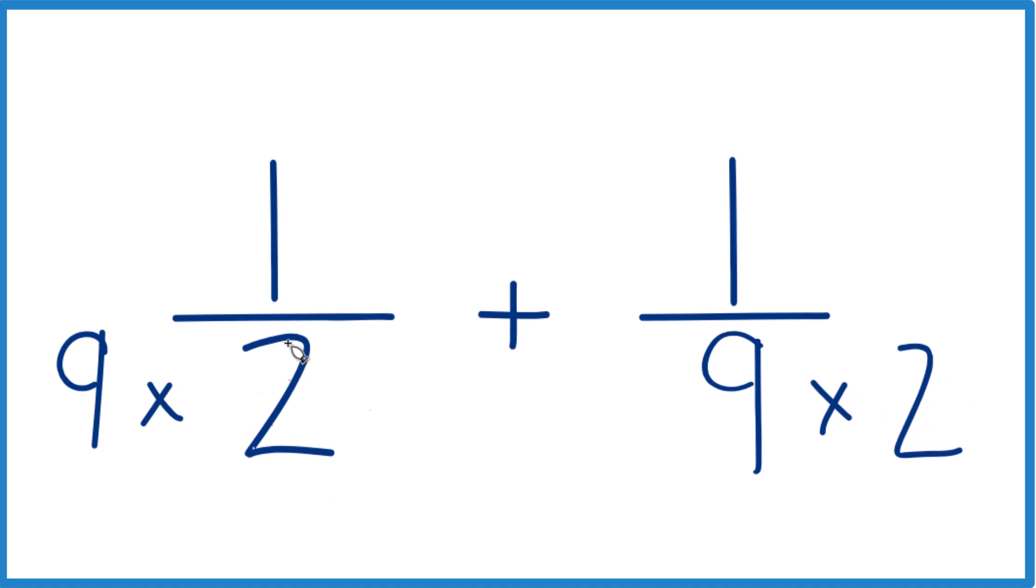But we can't just multiply the denominator by a number. We need to multiply the numerator by that same number. That's because 9 divided by 9 is just 1. So we don't change the value, just the way it's represented.